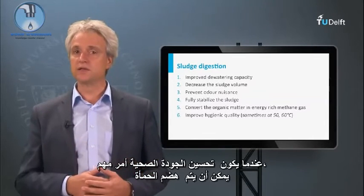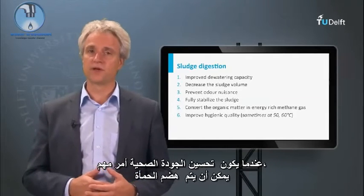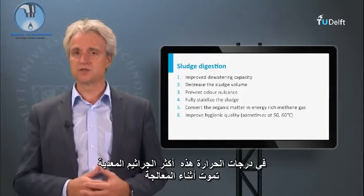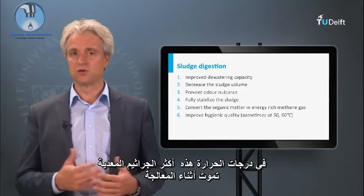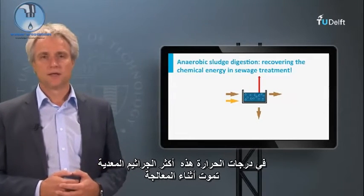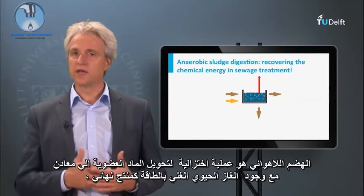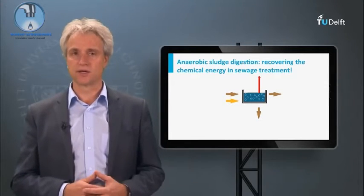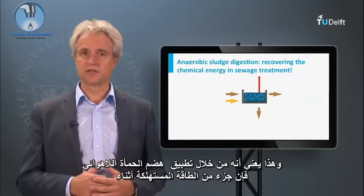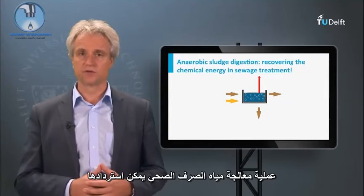When hygienic quality improvement is important, sludge digestion can be performed at temperatures between 50 and 60 degrees Celsius. At these temperatures, most infectious germs die off during treatment. Anaerobic digestion is a reductive mineralization process, with energy-rich biogas as the end product. This means that by applying anaerobic sludge digestion, part of the energy consumed during the sewage treatment process can be recovered.